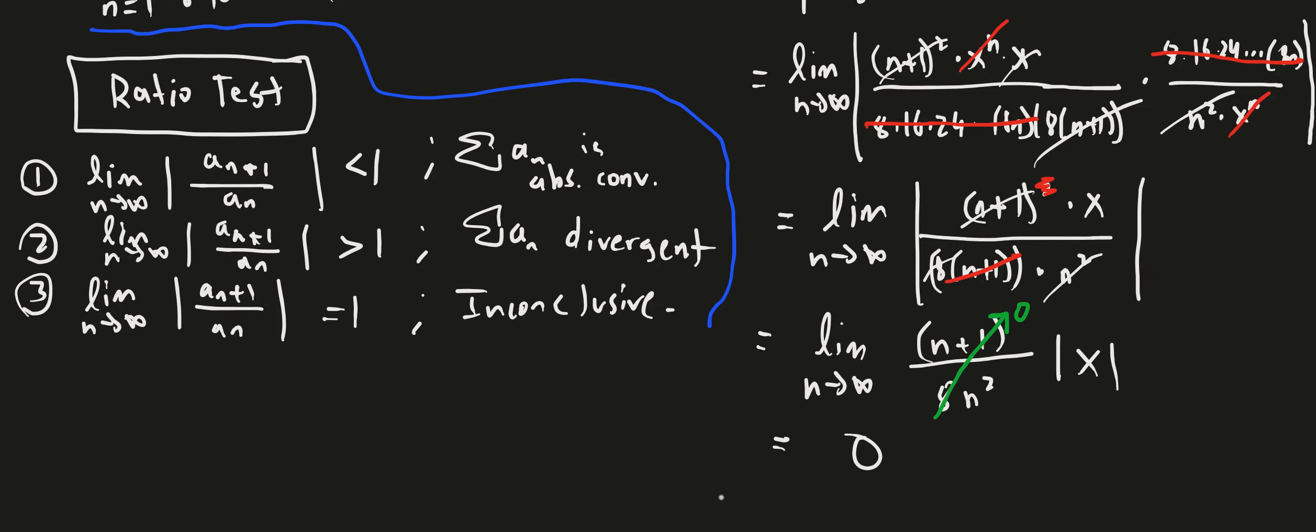What does that tell you about this? Well, since this is all approaching 0, and 0 is always less than 1, which is true, this means that for any value of x, we will get convergence. So any value of x is actually just going to give us not just convergence, but absolute convergence. We're going to get absolutely convergent series for any value of x that we plug in.